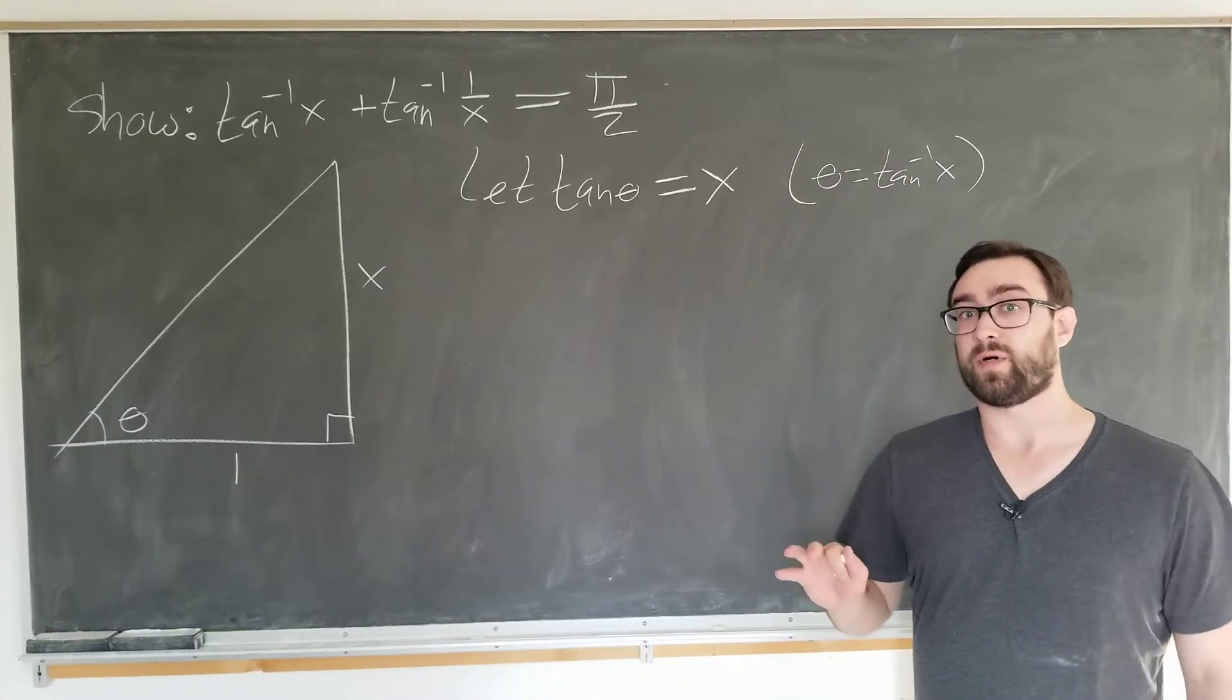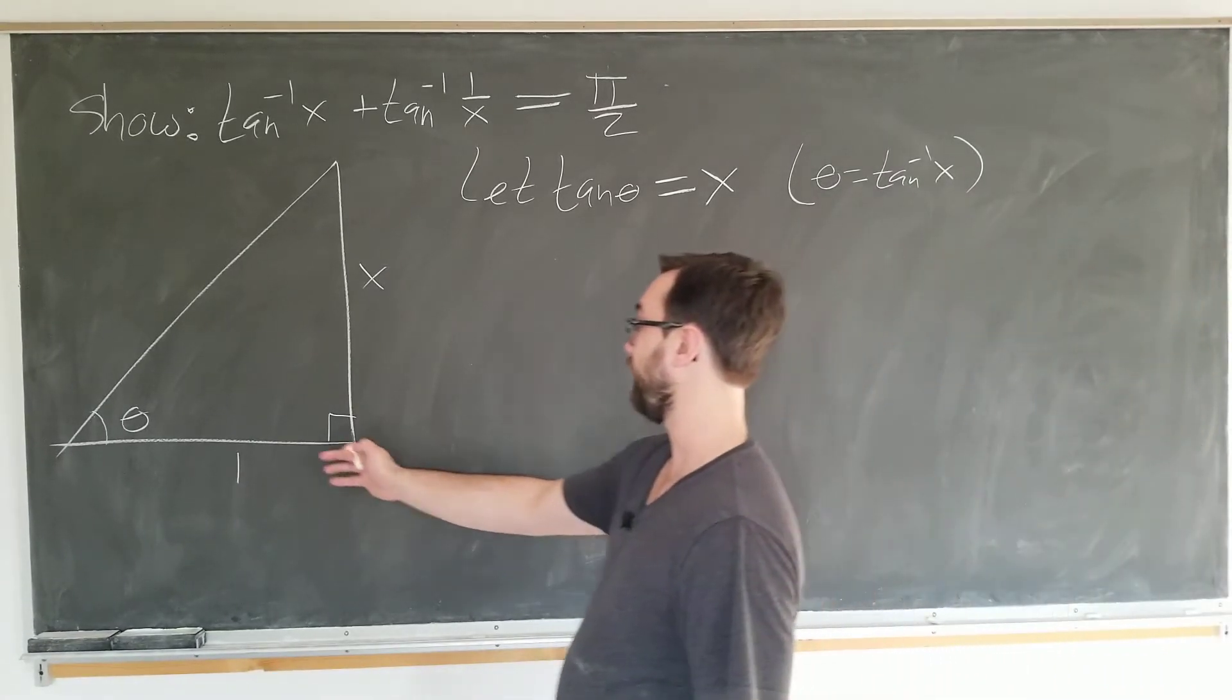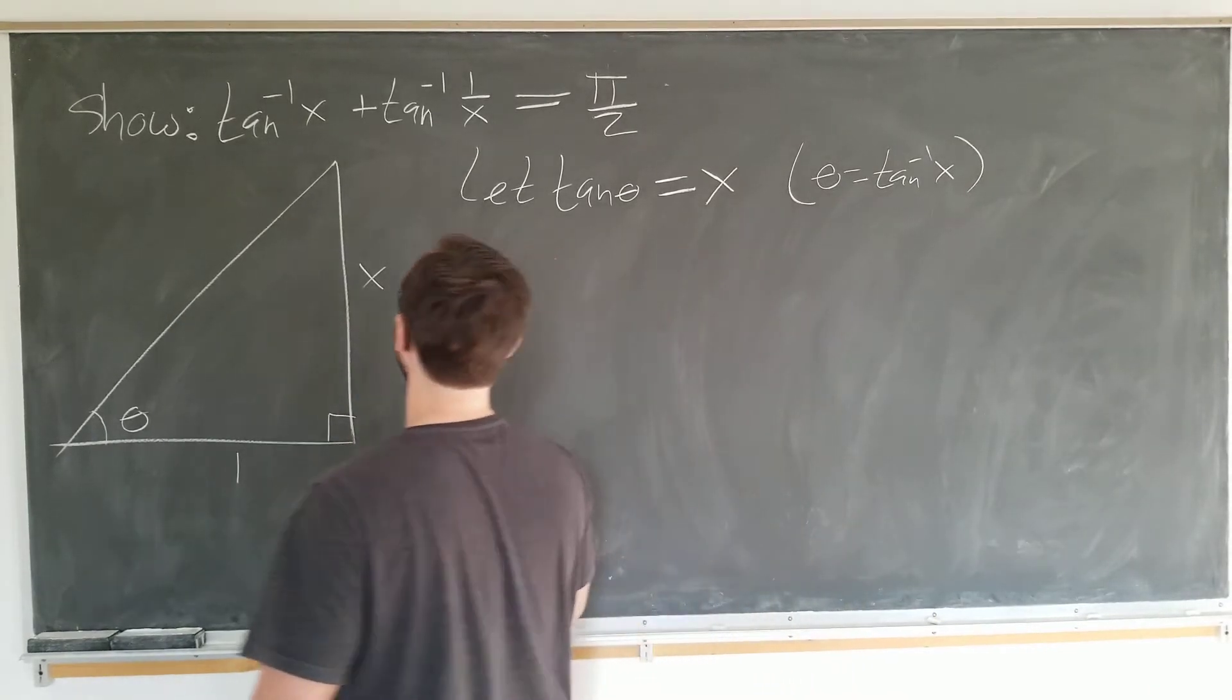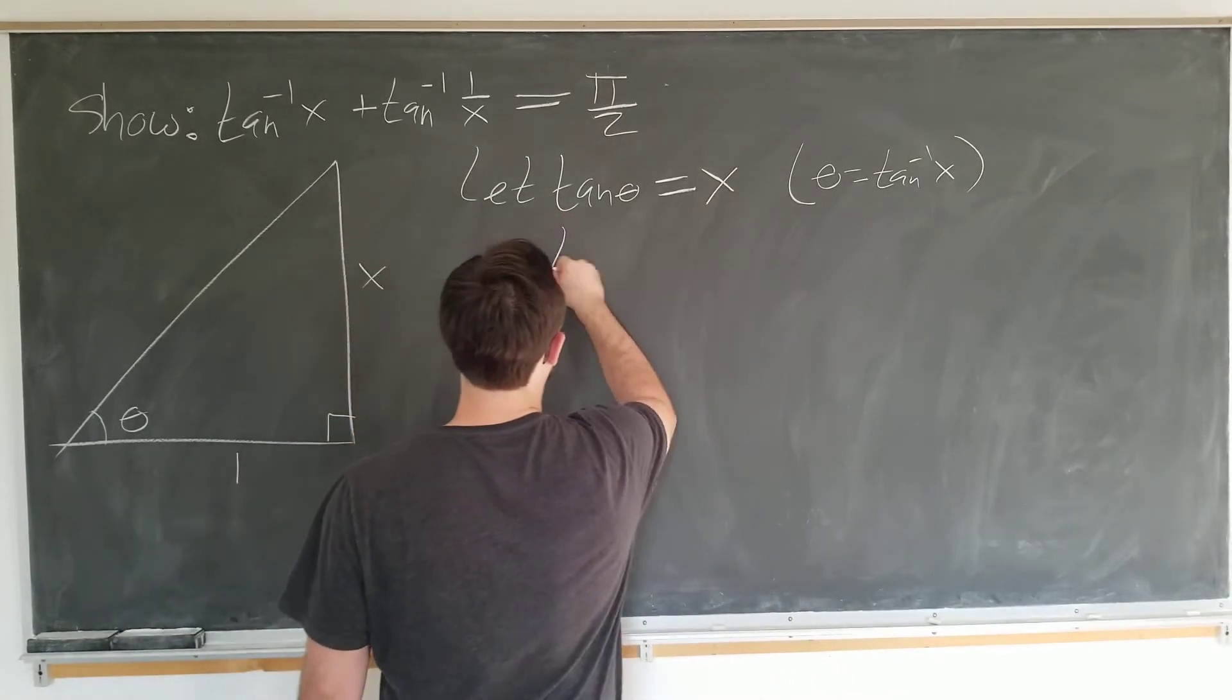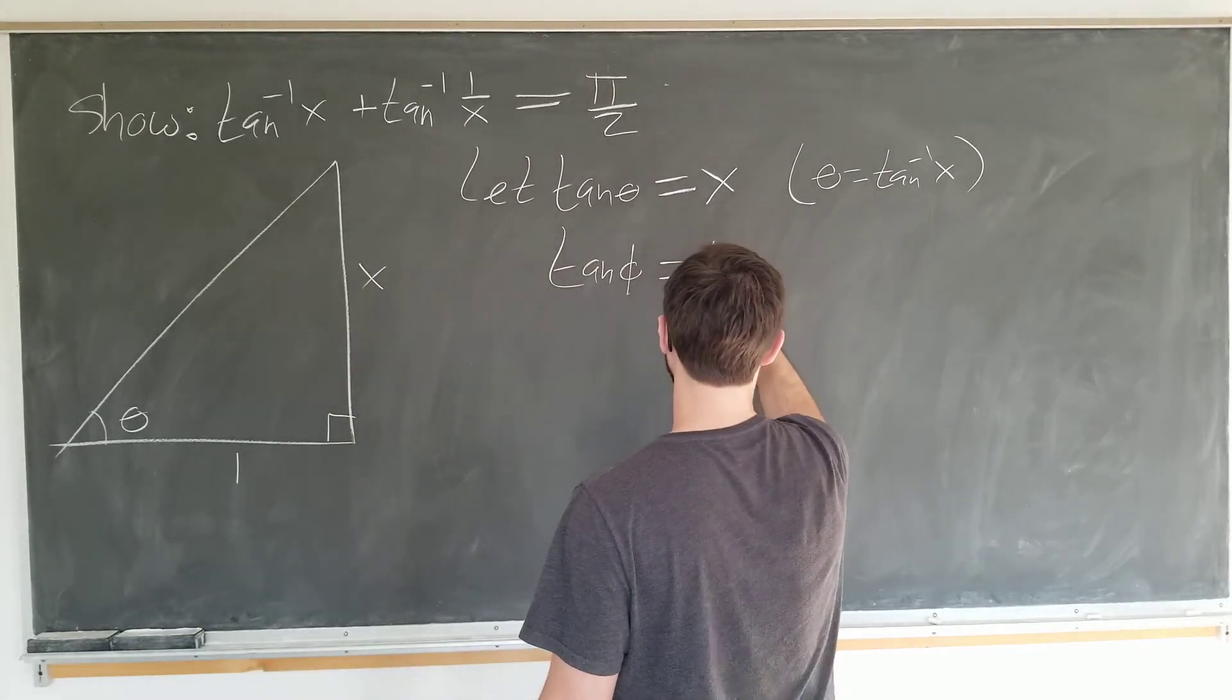And now the important part in the same triangle, we're going to consider a tangent of an angle that is 1 over x. So we're going to define another angle, tangent phi, to be 1 over x.